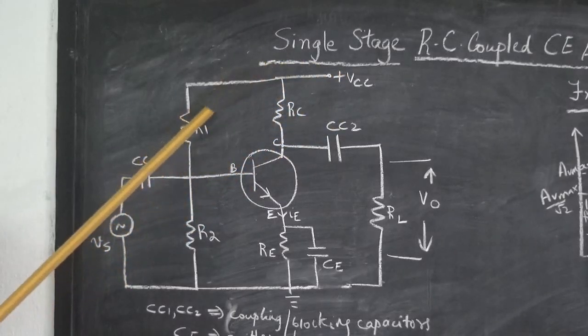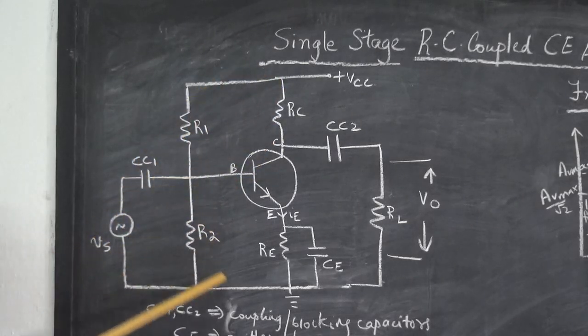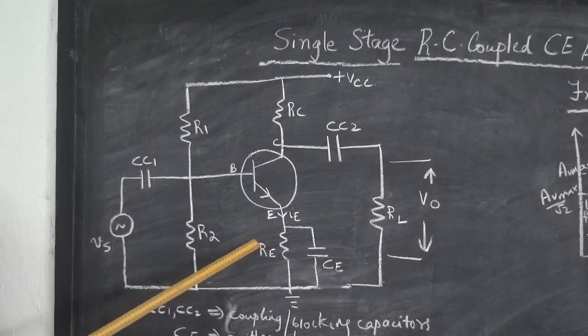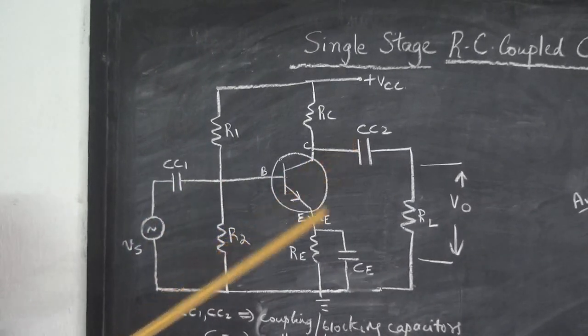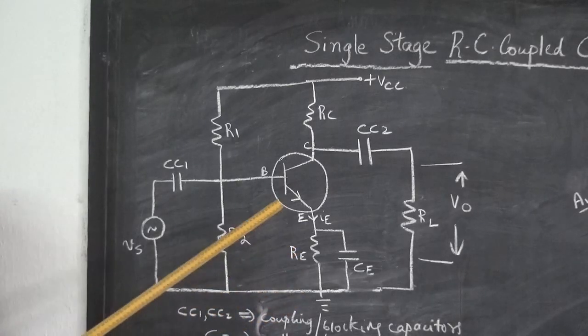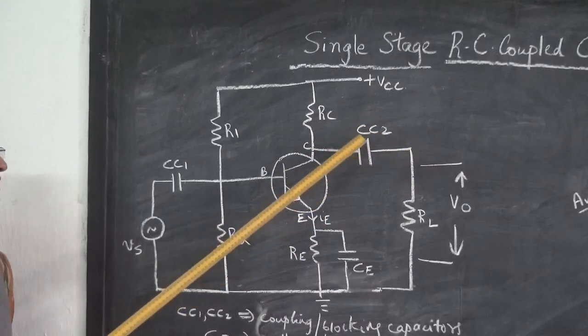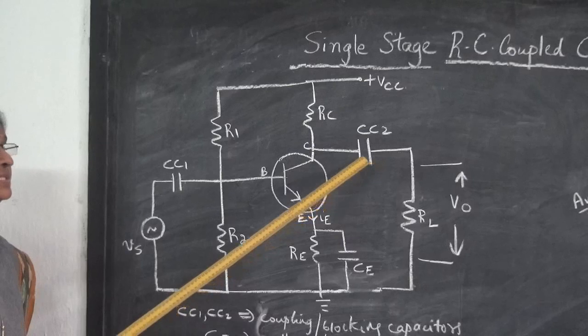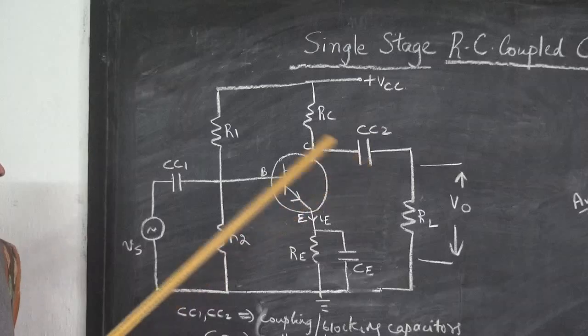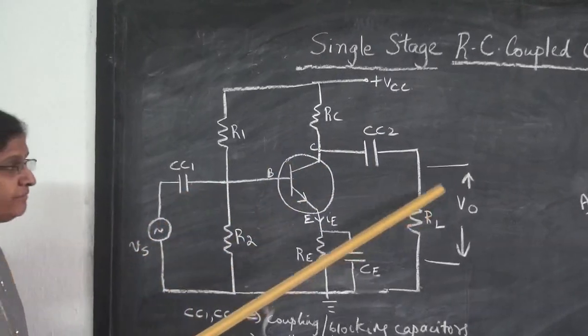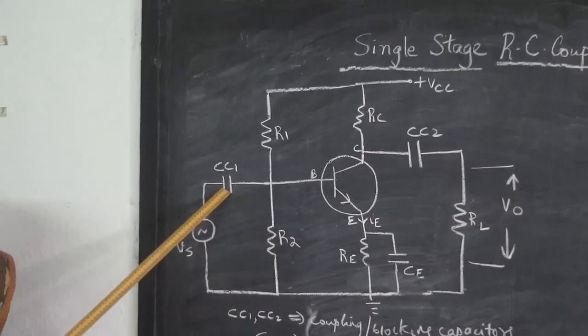So this DC supply ensures that the transistor is ready to work in the active region and a distortionless output is expected when it is working as an amplifier. Now besides that we have capacitors CC1 and CC2. These are called coupling capacitors or blocking capacitors because they couple one stage to the next stage. They are called blocking capacitors because the capacitor has a property of blocking DC and allowing AC to pass through it. So since we have input voltage AC, we want an amplified output AC voltage. So the DC is blocked by these capacitors CC1 and CC2.